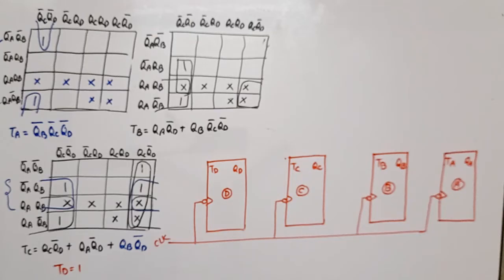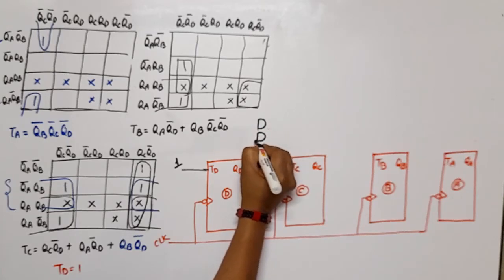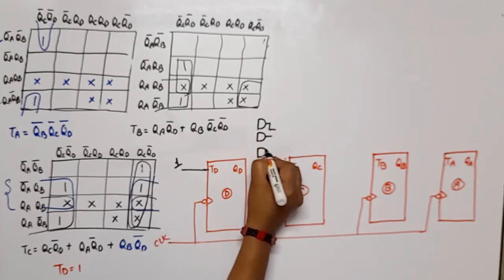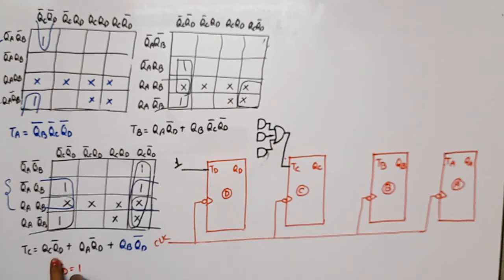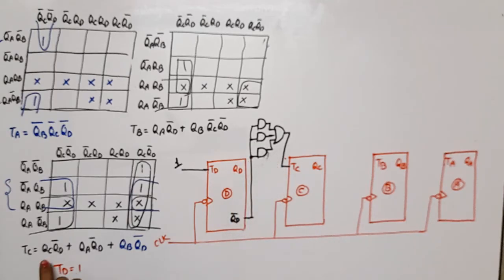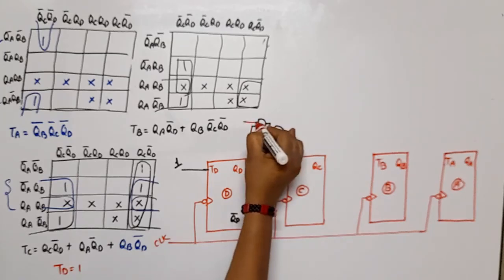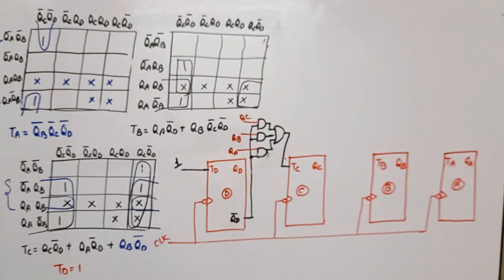Now let's connect the circuit. TD equals 1, so connect it to VCC or logic 1. For TC, which has 3 product terms, we need one OR gate with inputs from three AND gates; QD̄ is common to all three products so it is shared, while the other inputs are QC, QB, and QA respectively. For TB, there are 2 product terms, so one OR gate with two AND gates; inputs are QB·QC̄·QD̄ and QA·QD̄.